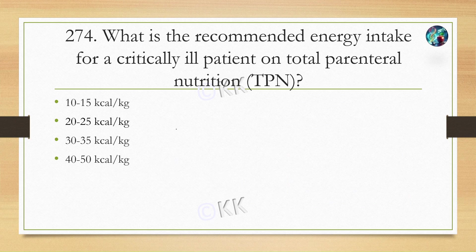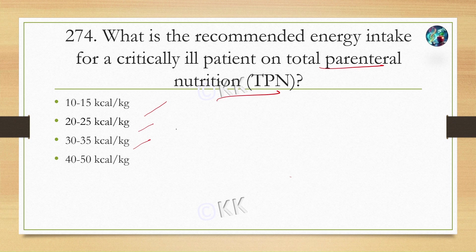What is the recommended energy intake for a critically ill patient on total parenteral nutrition (TPN)? TPN के बारे में पहले भी बहुत सारे questions दिए थे। Options हैं: 10-15 kcal/kg, Option B 20-25 kcal/kg, Option C 30-35 kcal/kg, Option D 40-50 kcal/kg। Correct option है Option B, 20-25 kilocalorie per kg per day। TPN में generally overfeeding को avoid करते हैं, लेकिन metabolic needs को fulfill करना भी ज़रूरी होता है, इसलिए calculate करके ही patient को देते हैं।